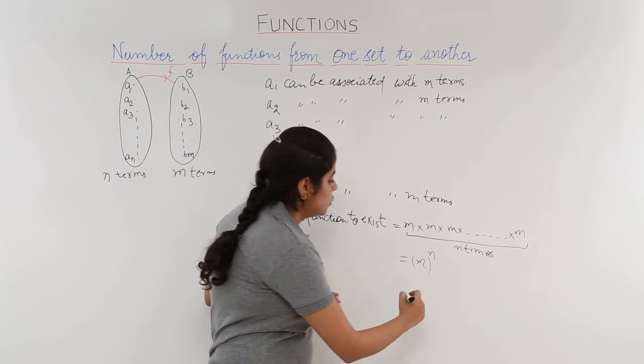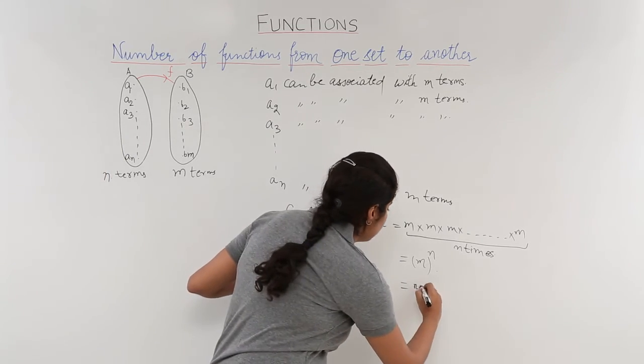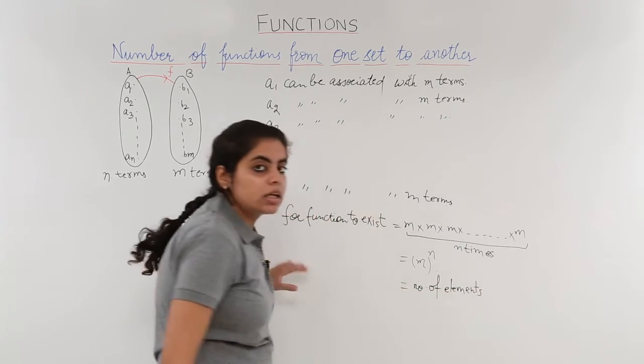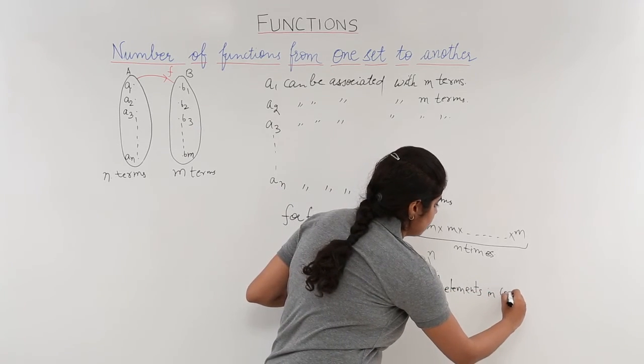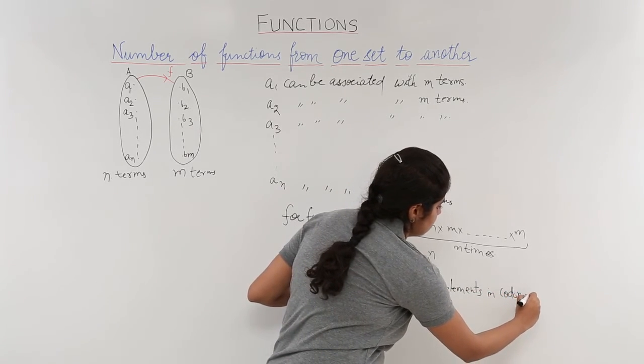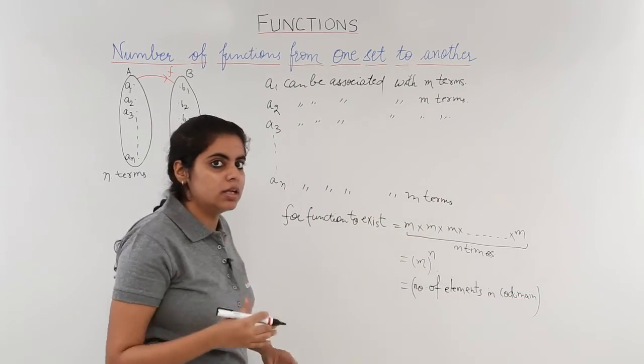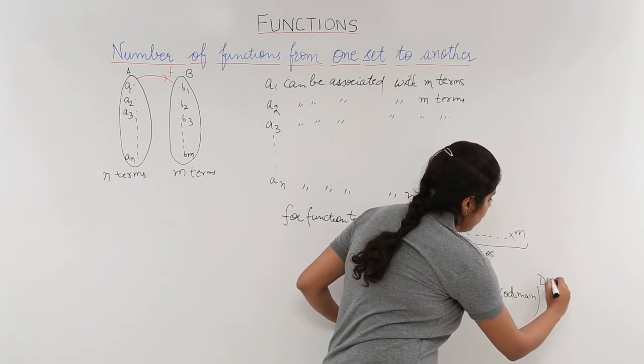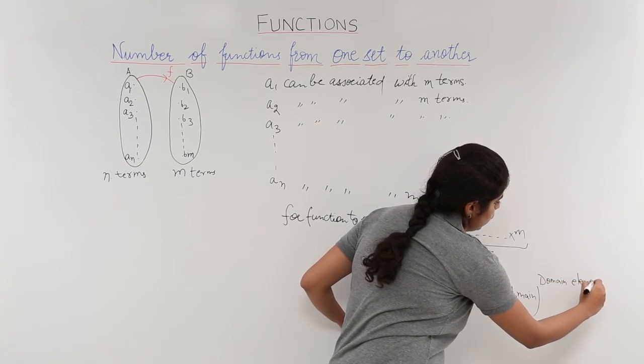So a generalized formula would be number of elements in the codomain to the power of number of elements in the domain, or I just write domain elements for short.